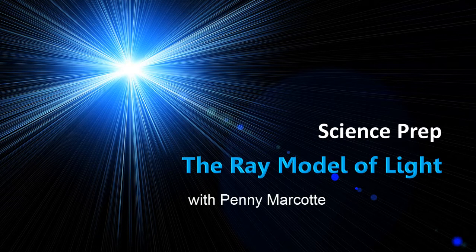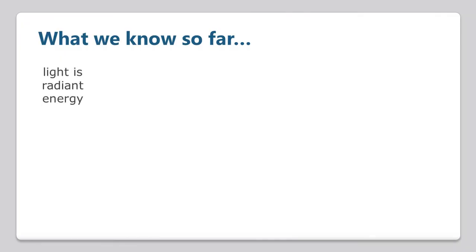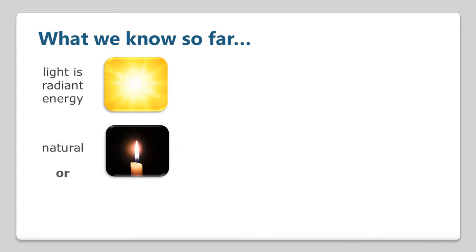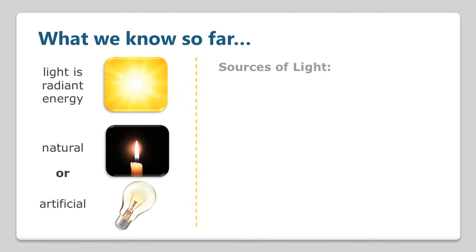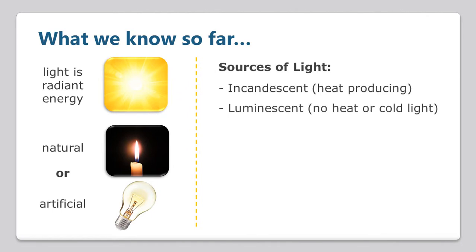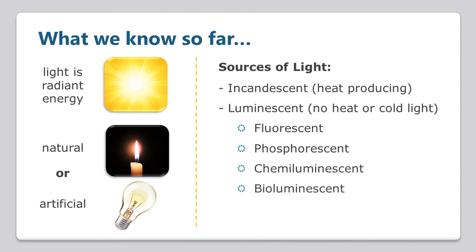Hi, this is Penny and in this lesson we will review the ray model of light. Here is what we know so far. Light is a form of radiant energy and it moves out or radiates in all directions from a light source. Light can be emitted from a natural or artificial object and sources of light can be classified as incandescent, which are heat-producing light sources, or luminescent, which do not produce heat and are sometimes referred to as cold light. There are different types of luminescent sources such as fluorescent, phosphorescent, chemiluminescent, or bioluminescent sources.